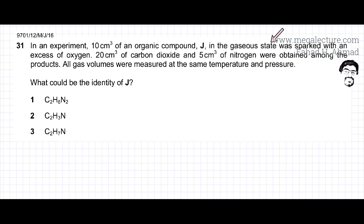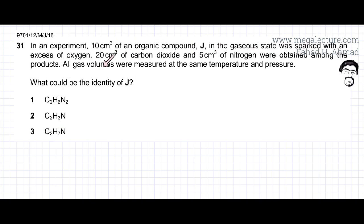You are given that in the gaseous state it was sparked with an excess of oxygen. 20 cm³ of carbon dioxide and 5 cm³ of nitrogen were obtained among the products. All gas volumes are measured at the same temperature and pressure. What could be the identity of J?